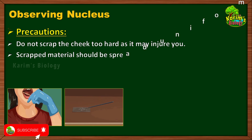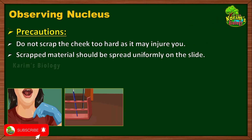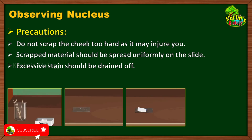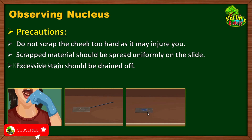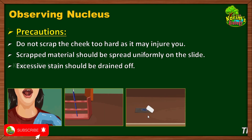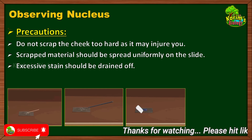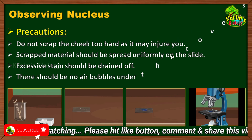The second precaution is that the scraped material should be spread uniformly on the slide. The third precaution is that excessive stain must be drained off immediately. If there is excessive stain when you observe the specimen under the microscope, it may spill onto the stage of the microscope and spoil it.